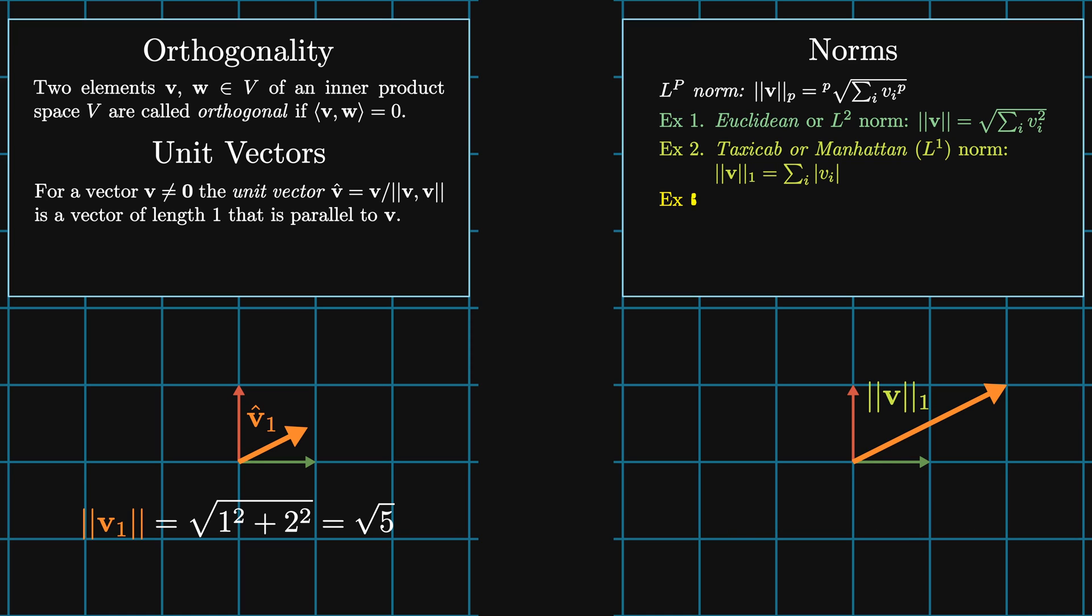The last is the L infinity norm, which is the maximum of the set of the absolute values of the components of v. Our vector has L infinity norm of two.